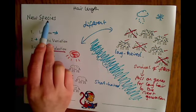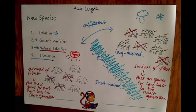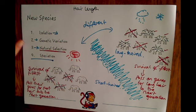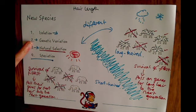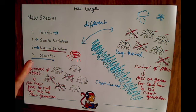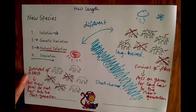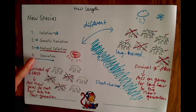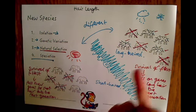By the definition of species, these two groups would no longer be able to interbreed. There are often quite long exam questions on speciation, so you need to cover all these points: isolation, the idea of genetic variation — naturally some have shorter hair, some longer — natural selection involving survival of the fittest and passing on genes to the next generation, which eventually leads to speciation where the animals can no longer interbreed.